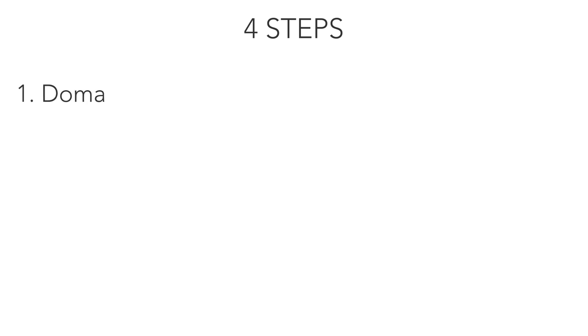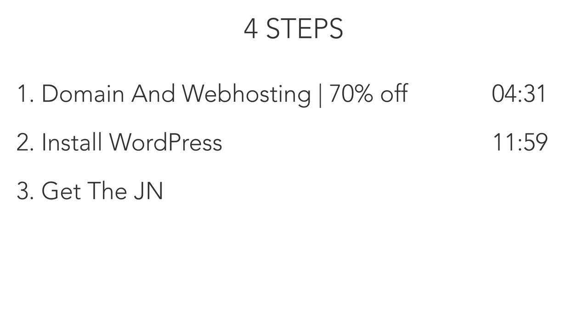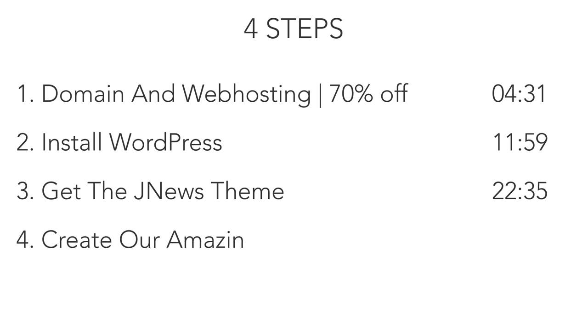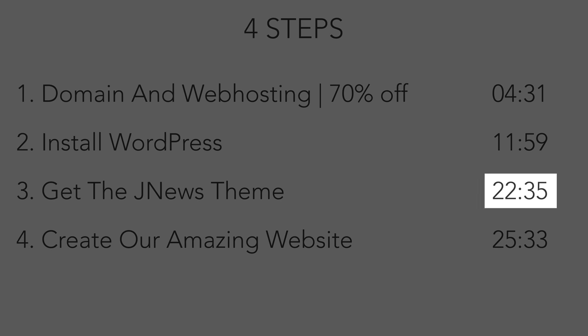Please like this video and subscribe for more tutorials about WordPress and how to make money with your website. Feel free to leave a comment — I do my best to answer them all. There are four steps to create an amazing news or blog website: get a domain name and web hosting, install WordPress, get the JNews theme, and then create your website. If you already have hosting and WordPress installed, I'll show you on screen where to continue.